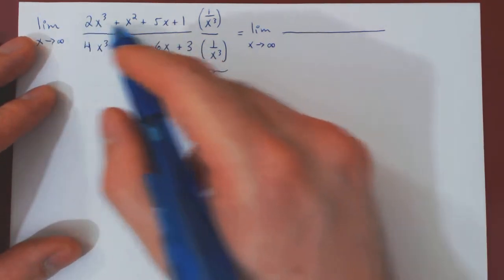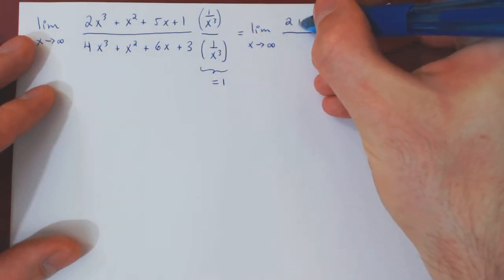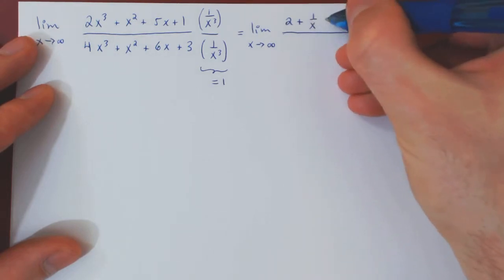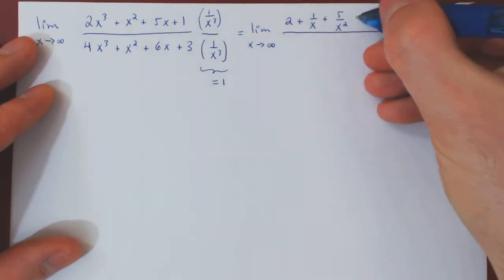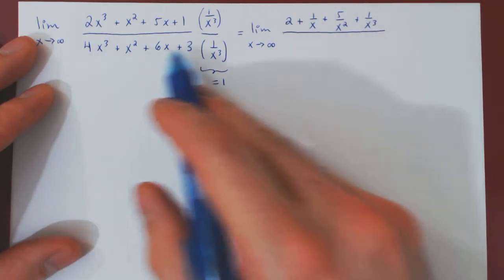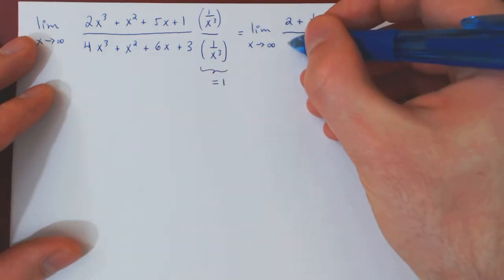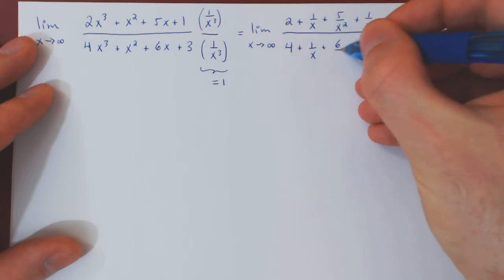So if you multiply it through by 1 over x cubed, well, 2x³ over x³ is 2, plus x² over x³ is 1 over x, plus 5x over x³ is 5 over x², and 1 over x³. Same for the denominator, once we multiply it through by 1 over x³, it will become quite simply 4, plus 1 over x, plus 6 over x², plus 3 over x³.